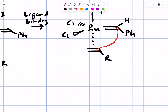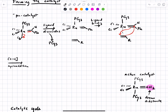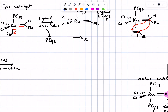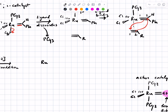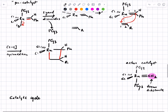The pi electrons attack this carbon to form a new sigma bond, and then these pi electrons attack this carbon to form a new sigma bond. That's called a 2+2 cycloaddition because you're taking two carbons here and two carbons there and forming new sigma bonds — one is a carbon-carbon sigma bond and the other is a carbon-metal sigma bond. The product is called a metallocyclobutane: a four-membered ring involving a metal, and we've traded the two pi bonds for two sigma bonds.